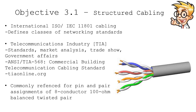One of those international standards is the ISO IEC 11801 cabling standard. And in the United States or North America, you've probably heard of the Telecommunications Industry Association, or TIA. The TIA standard for cabling is the TIA-568 standard, which is the Commercial Building Telecommunications cabling standard. You can learn more about it on the TIA website at tiaonline.org.